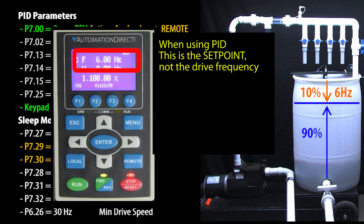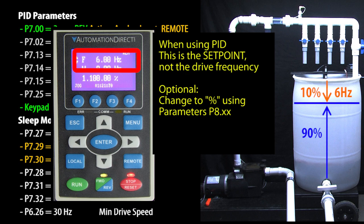You can view the set point in percent by adjusting the parameters in group 8 – we are not going to take the time to do that in this video.